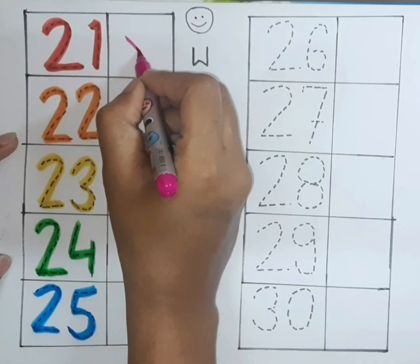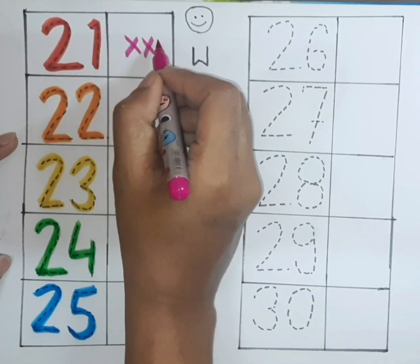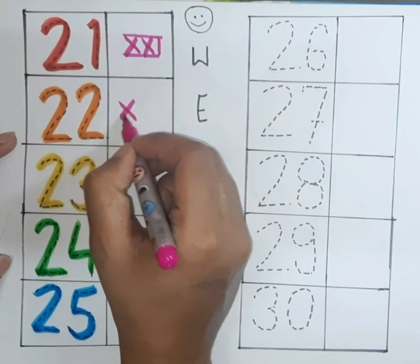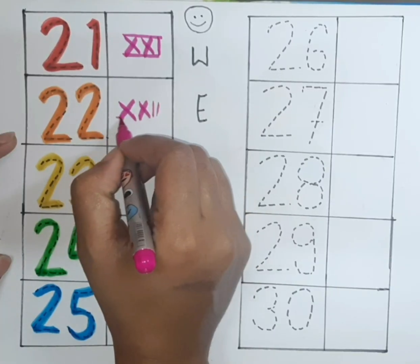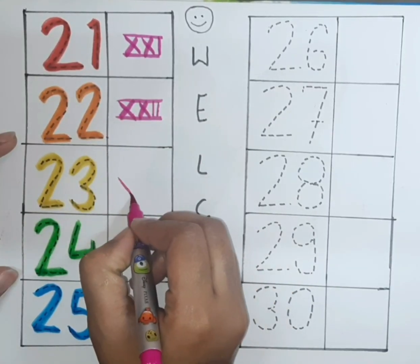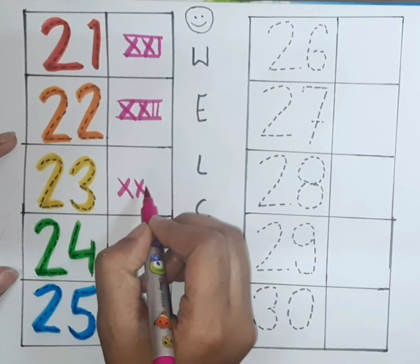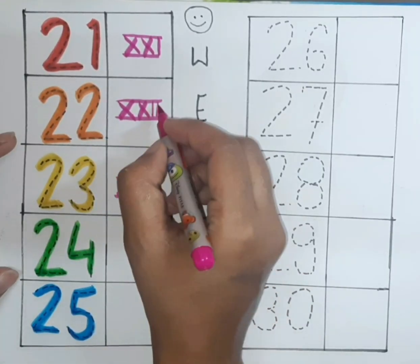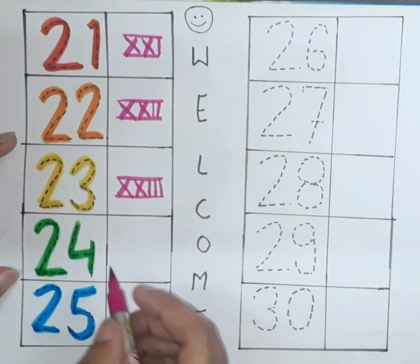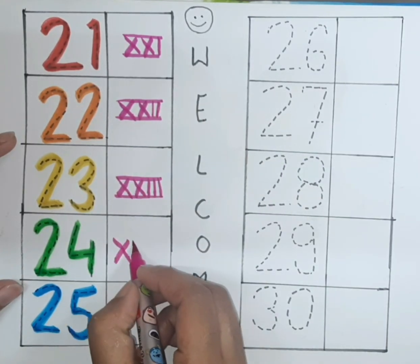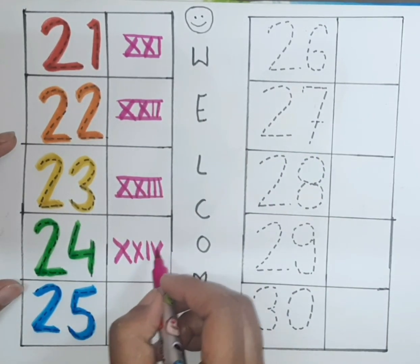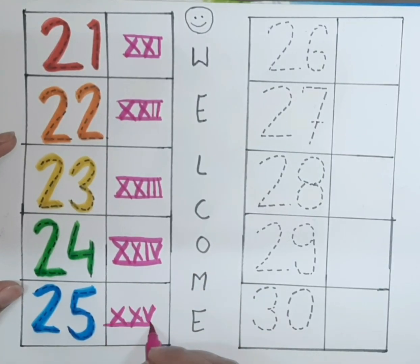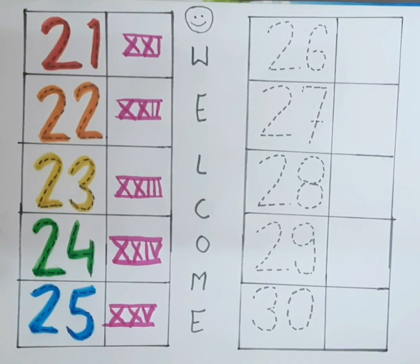Let's start with roman numbers. Twenty one in roman number. Twenty two in roman number. Twenty three. Twenty four — double X, double X, I, V. Twenty five — double X and V.